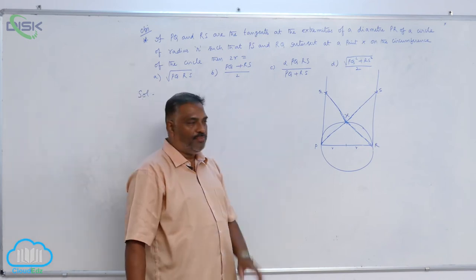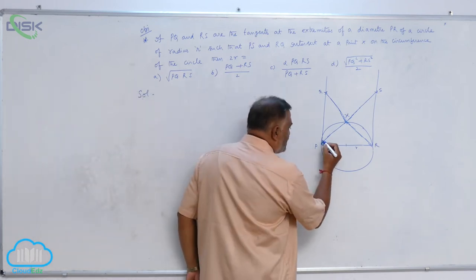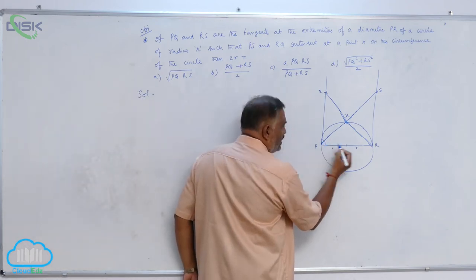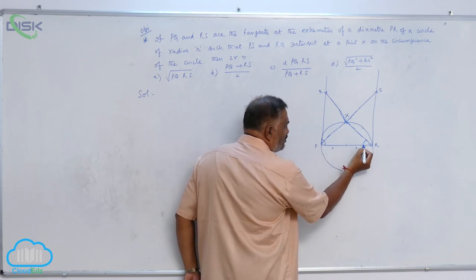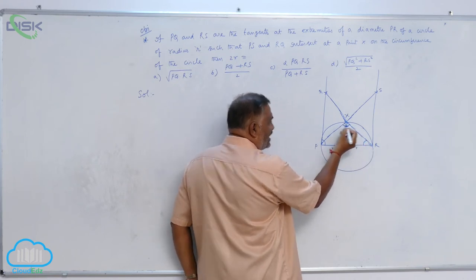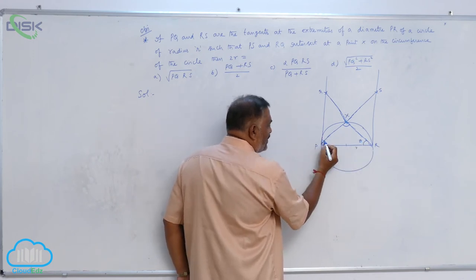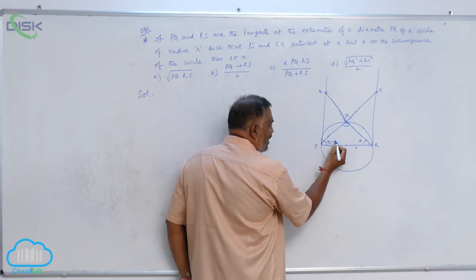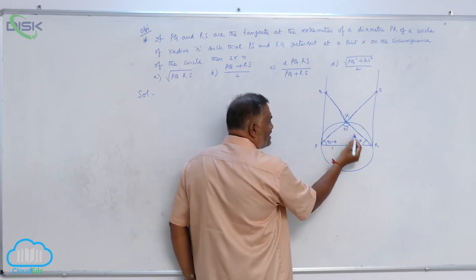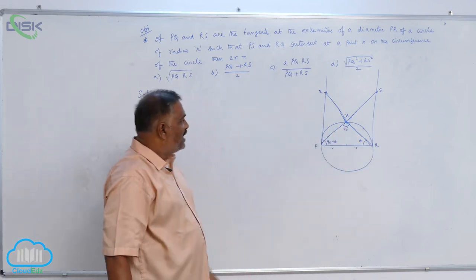Now, 2R is equal to - no doubt this is going to be 90 degrees. So, we assume that this is 90 degrees. If this is theta, then this will become 90 minus theta because angle in a semicircle is 90.